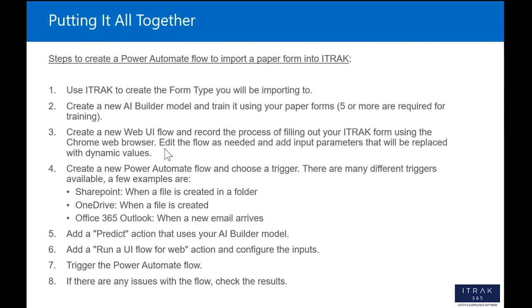Step three continued: create a new web UI flow and record the process of filling out your iTrack form using the Chrome web browser. You may need to tweak the flow a little and add input parameters that will be replaced with dynamic values pulled from the form. Step four: create the full Power Automate flow and choose a trigger. Triggers can include when a file is created in a SharePoint folder, when a file is created in OneDrive, or when a new email arrives in Office 365 Outlook — triggering off an attachment in that email.